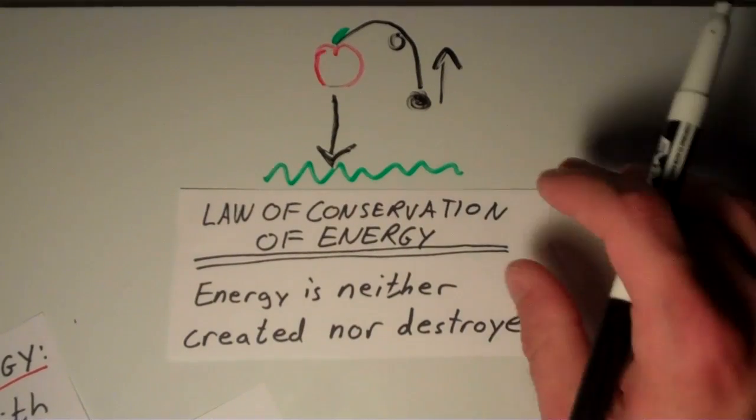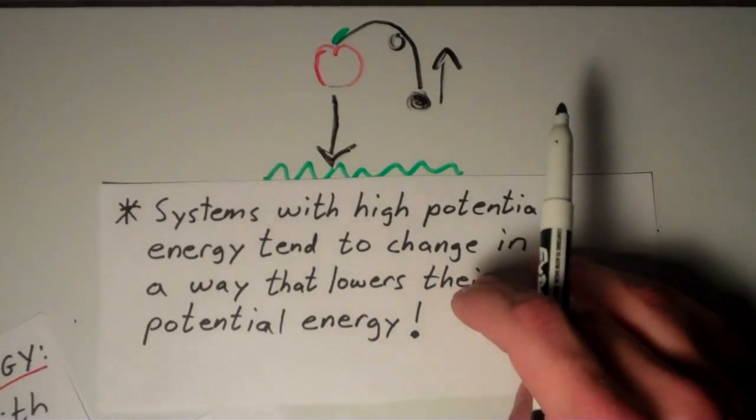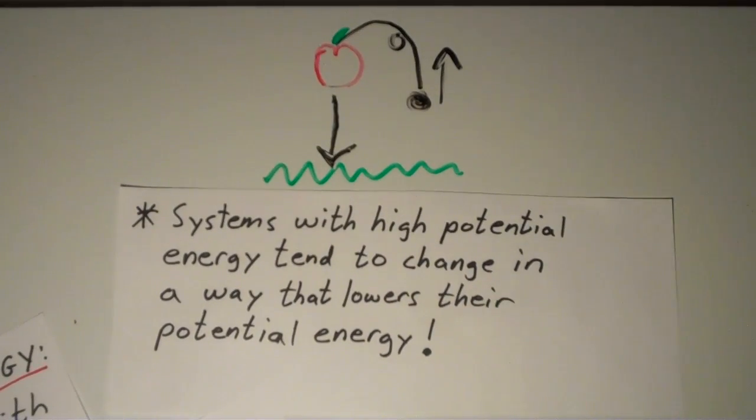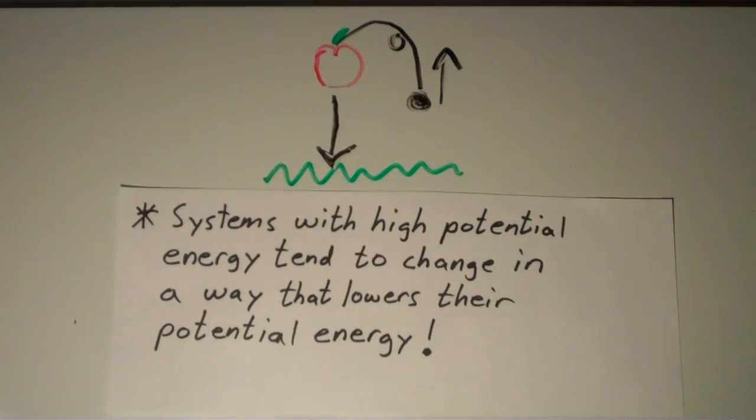Another important principle about energy is that systems with high potential energy tend to change in a way that lowers their potential energy. If we go back to our apple example, the apple being in a position of being held high above the ground is actually unstable. In other words, the apple really wants to fall down, but something's holding it up.